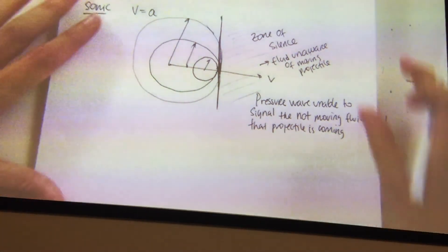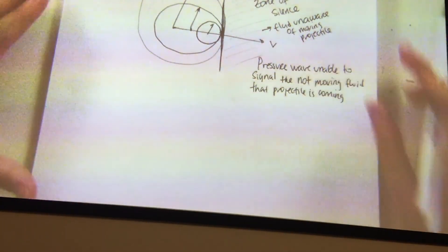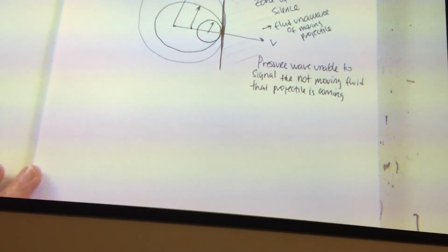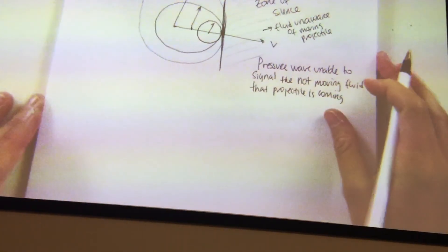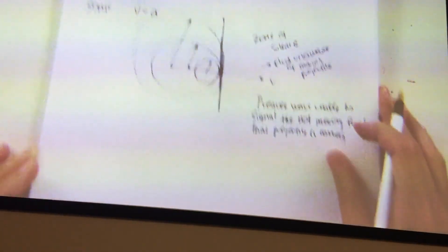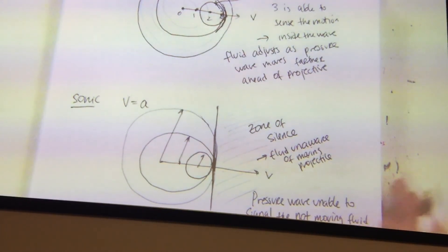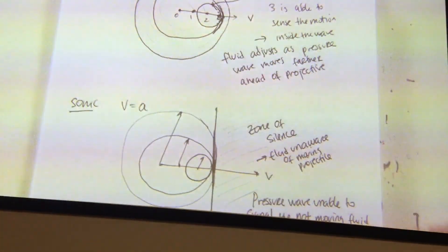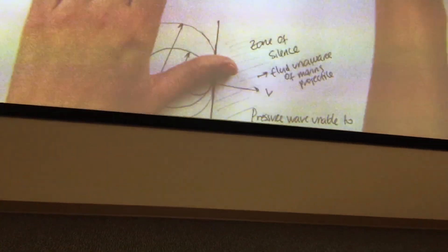A student asks to go back to the earlier diagrams and explain each of the circles — positions 0, 1, and so on — as it was getting a bit confusing.